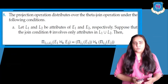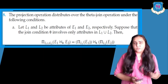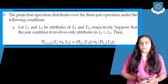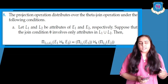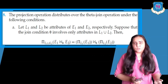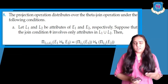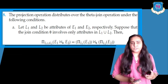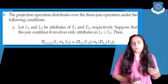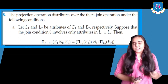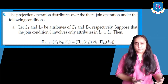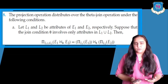The eighth rule says the projection operation distributes over the theta join operation under the following conditions. The previous rule was about the distribution of sigma; this rule is about the distribution of pi. Let L1 and L2 be attributes of E1 and E2 respectively — meaning L1 columns belong to E1 and L2 columns belong to E2. Suppose the join condition theta involves only attributes in L1 union L2; in that case we can distribute the pi operation.